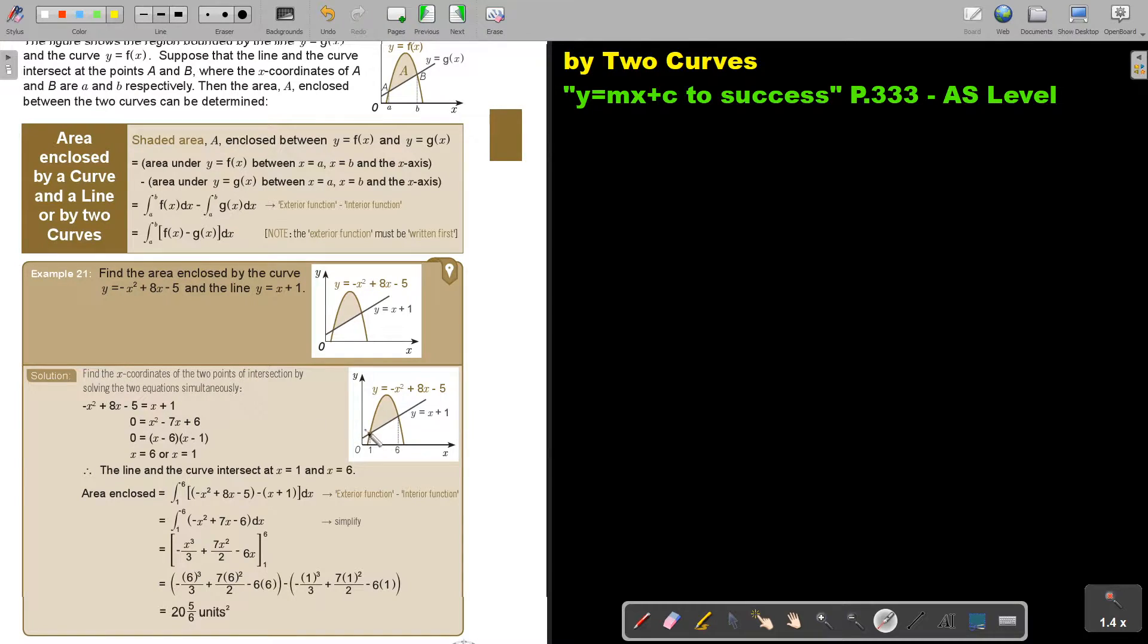So if I substitute the one into the other one, I factorize, I get six and one. So basically, this is the one and this is the six. Then the line and the curve intersects at one and six. The area will then be six and one and it's first, first the curve minus the straight line.